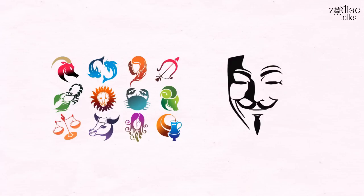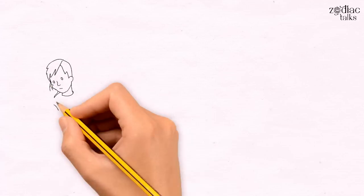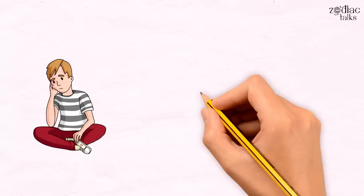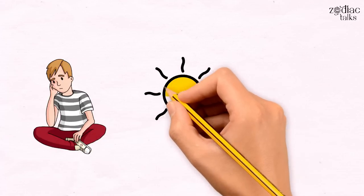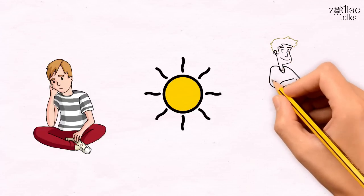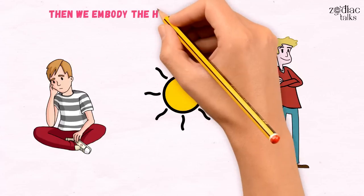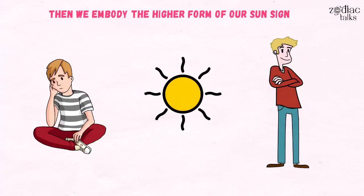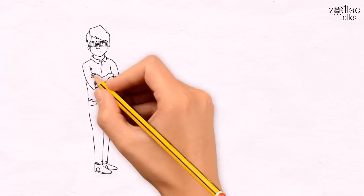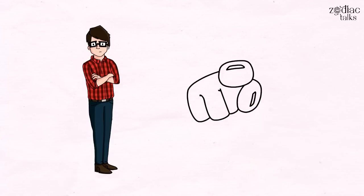Each zodiac sign has a dual personality, its lower and its higher form. When we get stuck in negative emotions and feelings, we tend to exhibit the lower vibration of our sun sign. But when we're at peace with ourselves and work on our strengths and fortify our higher selves, then we embody the higher form of our sun sign. Find out about the dual personality of zodiac signs in today's video and see which one you are currently.